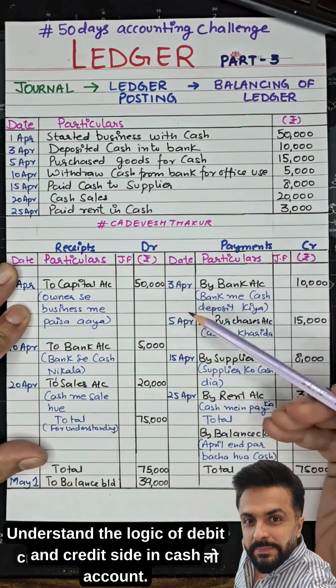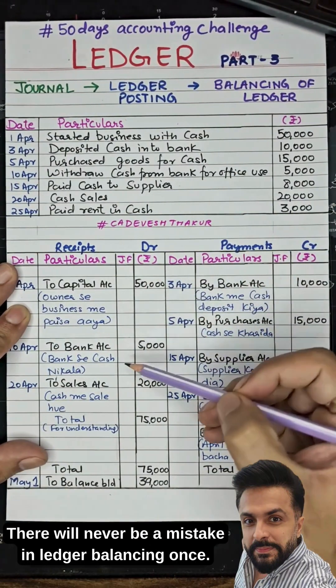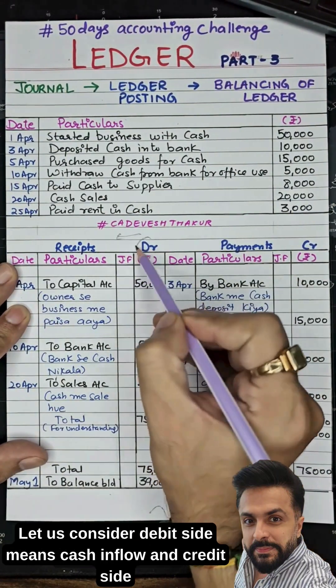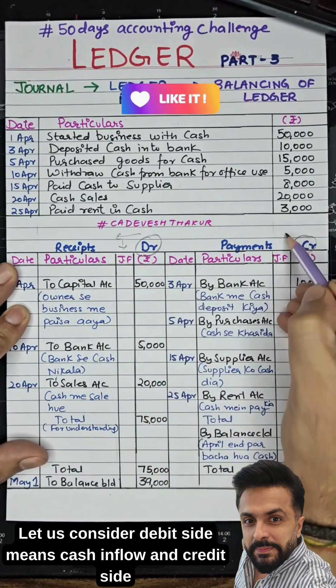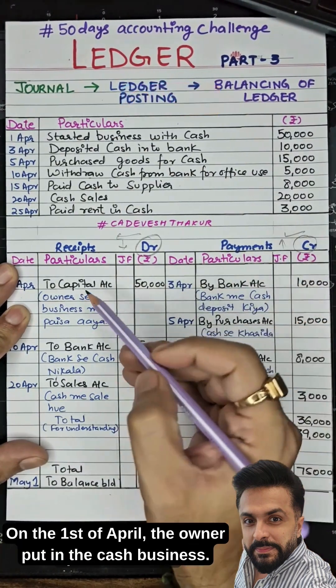Understand the logic of the debit and credit side in a cash account. There will never be a mistake in ledger balancing once you understand this. Let us consider debit side means cash inflow and credit side means cash outflow, as an example.